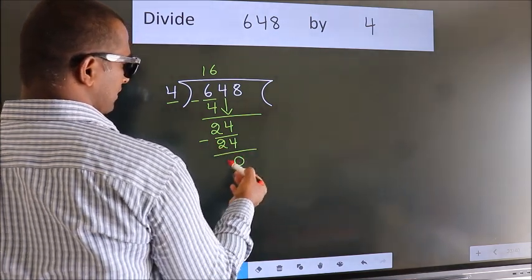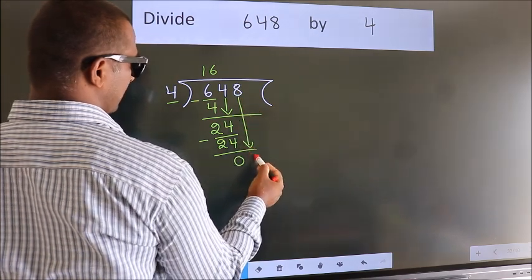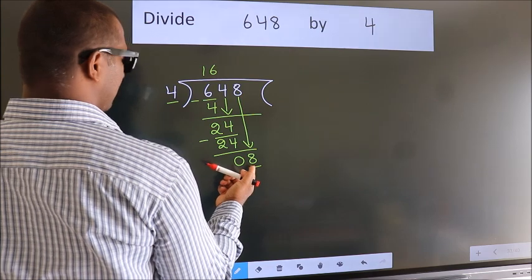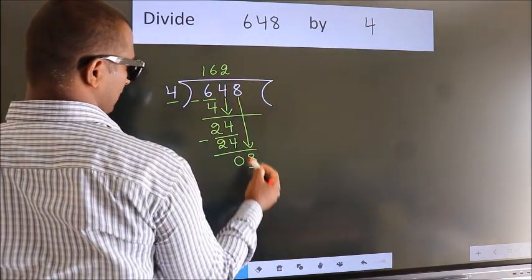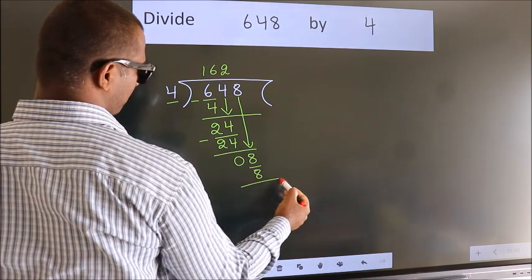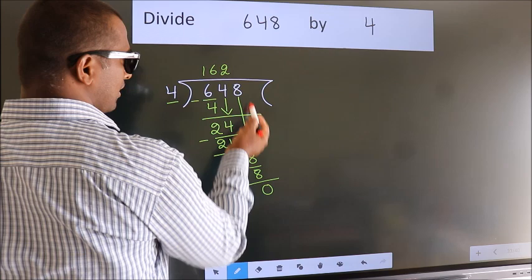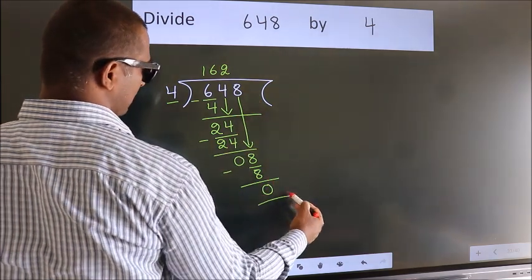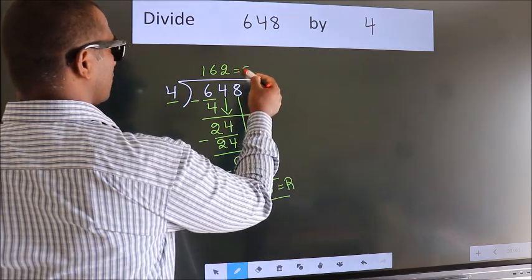After this, bring down the beside number, so eight down. So eight. When do we get eight in four table? Four twos is eight. Now we subtract. We get zero. No more numbers to bring down, so we stop here. This is our remainder. This is our quotient.